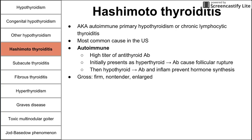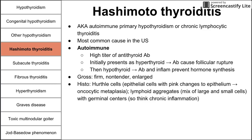Grossly, the thyroid is firm, non-tender, and enlarged — usually noticeable on palpation. On histology, we see Hürthle cells (epithelial cells with pink changes through oncocytic metaplasia) and lymphoid aggregates with germinal centers, indicating chronic inflammation — hence the name chronic lymphocytic thyroiditis.